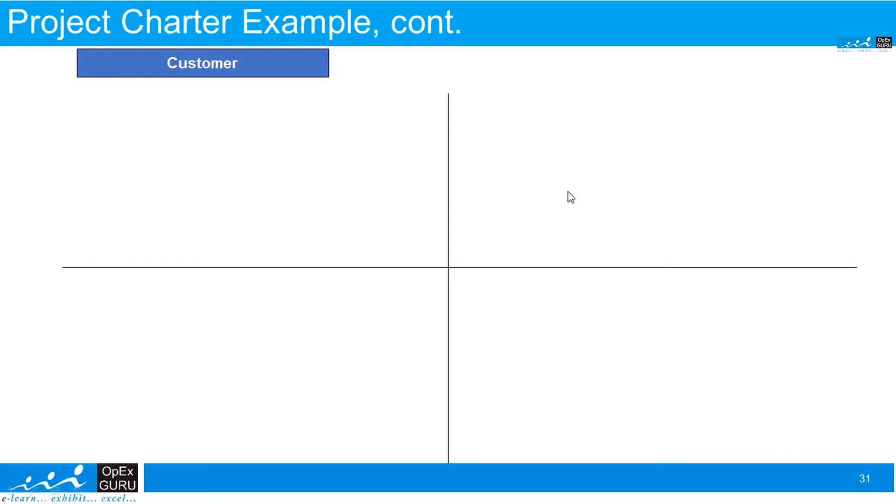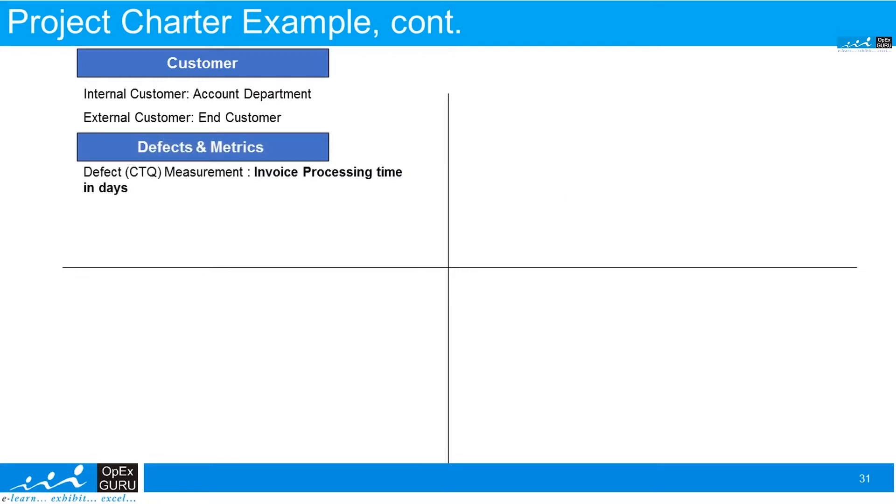Let us understand other components of the project charter. Customer: who is the customer? Accounts department. Who is external customer? End customer. What is the defect matrix, or we call it CTQ, critical to quality parameter on which we are doing the project? Here the CTQ or defect measurement is invoice processing time in days. What is the definition of a defect? If any invoice which has taken more than two days to process.